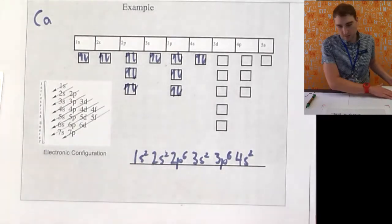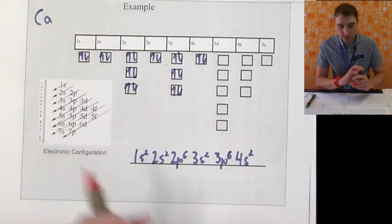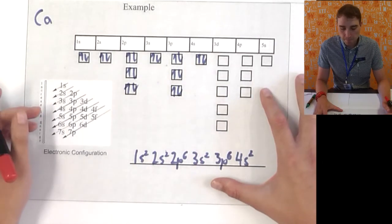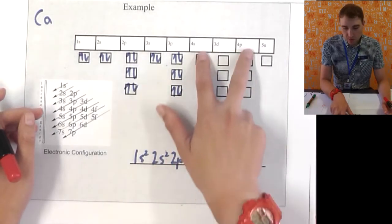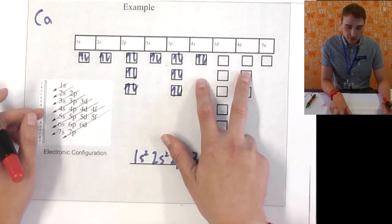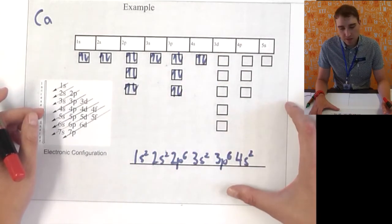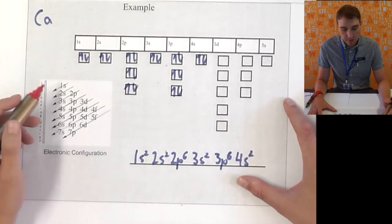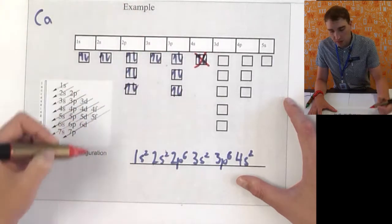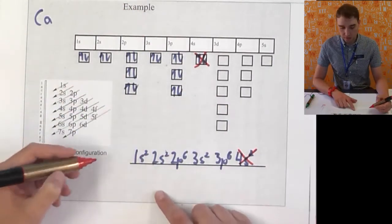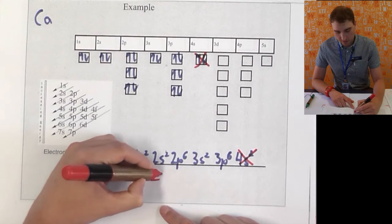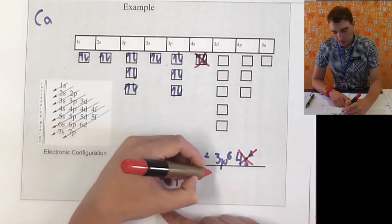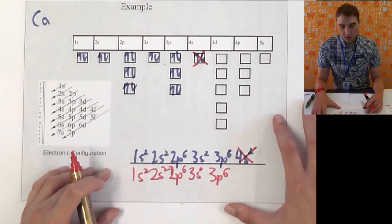Now, in this case, it has a full 3p subshell underneath, and it's got these two electrons in the 4s subshell outside. We don't have a full 4 main shell, so we've got these two electrons sitting in the outermost shell, the 4s subshell. What's going to happen is it's going to lose those two electrons, which means when we're writing out the electron configuration, it's going to be 1s2, 2s2, 2p6, 3s2, 3p6.